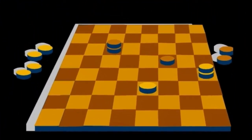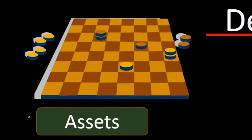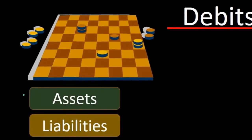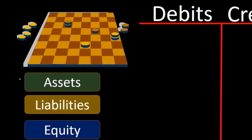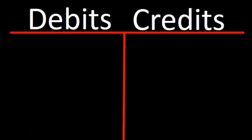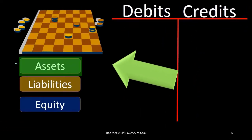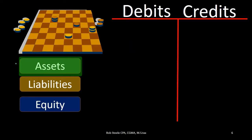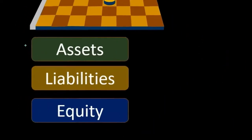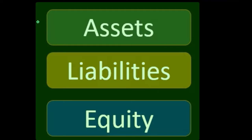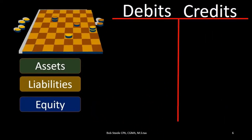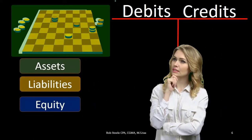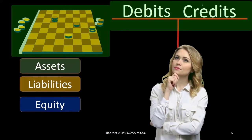So what we're going to do, just like the checkerboard, is put our pieces on the board. Our pieces are going to be the account types — not the actual accounts, but account types. For example, within assets we have cash, accounts receivable, and supplies. Within those account types we can see where they line up on the board, with debits on the left and credits on the right.